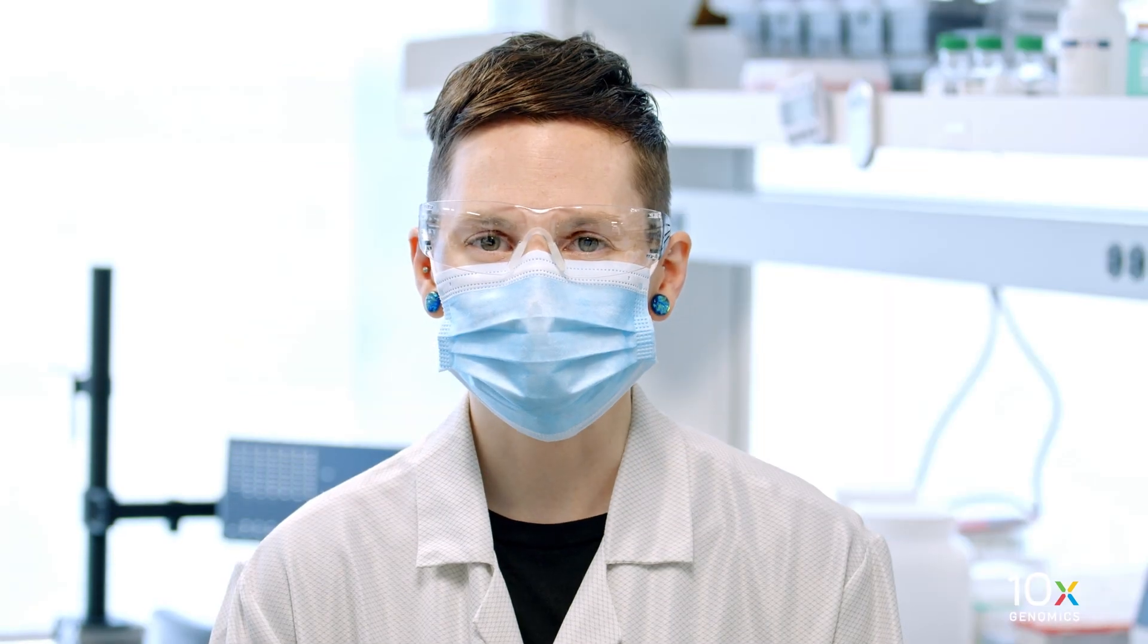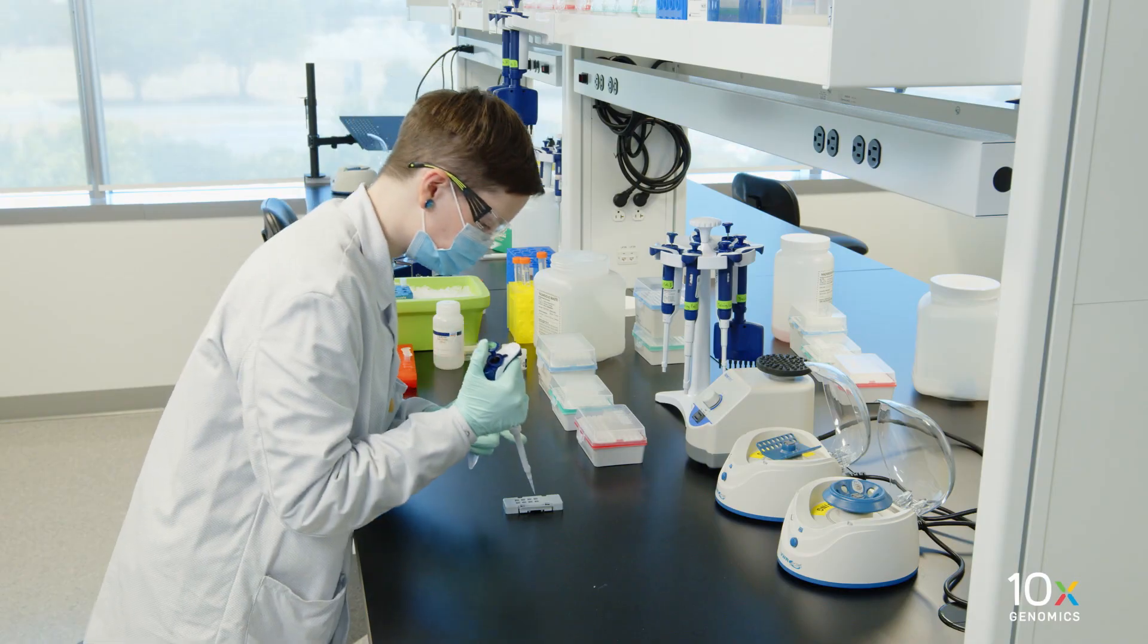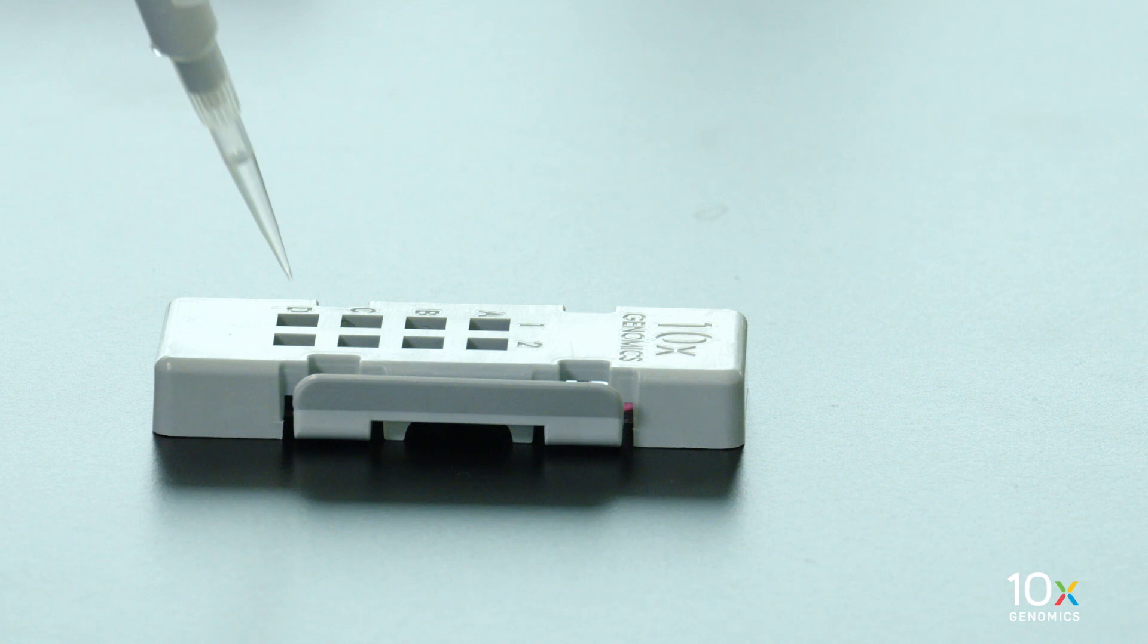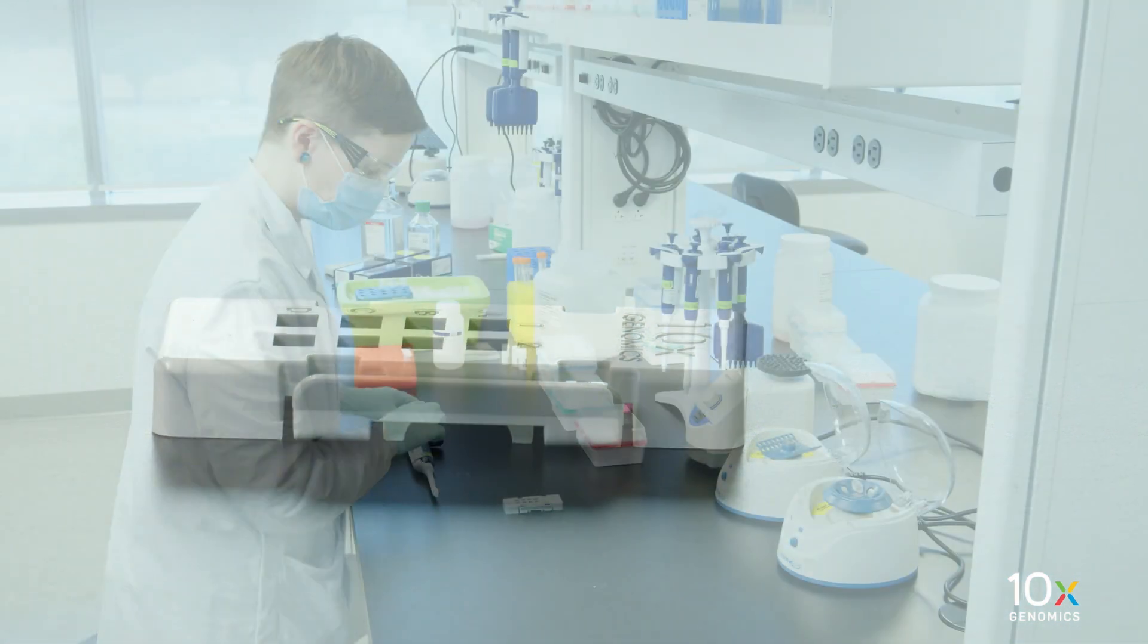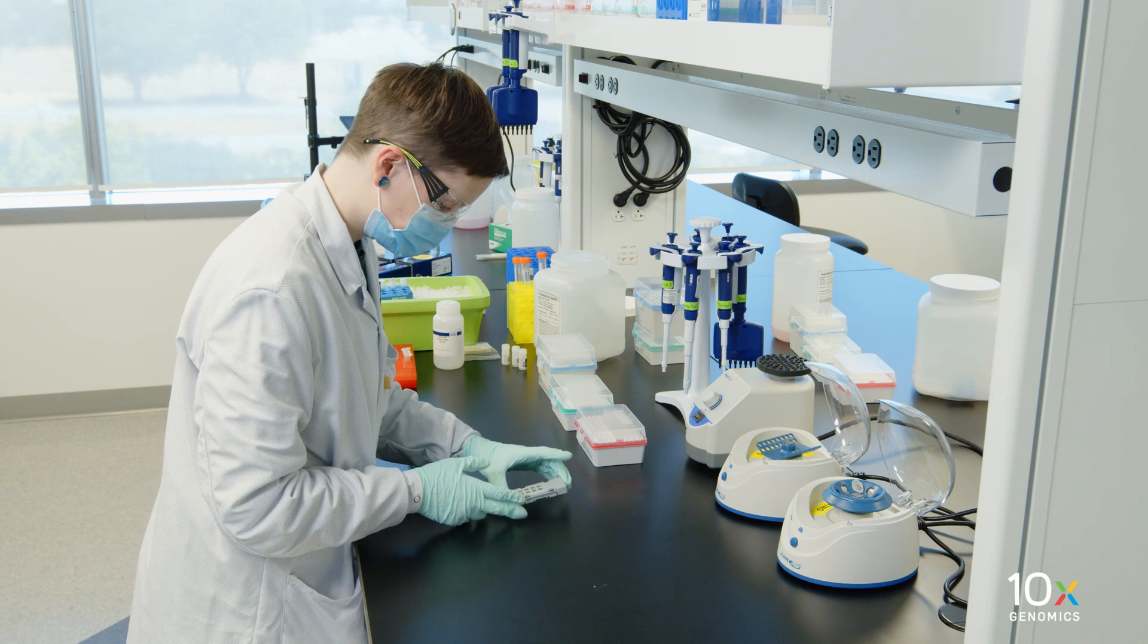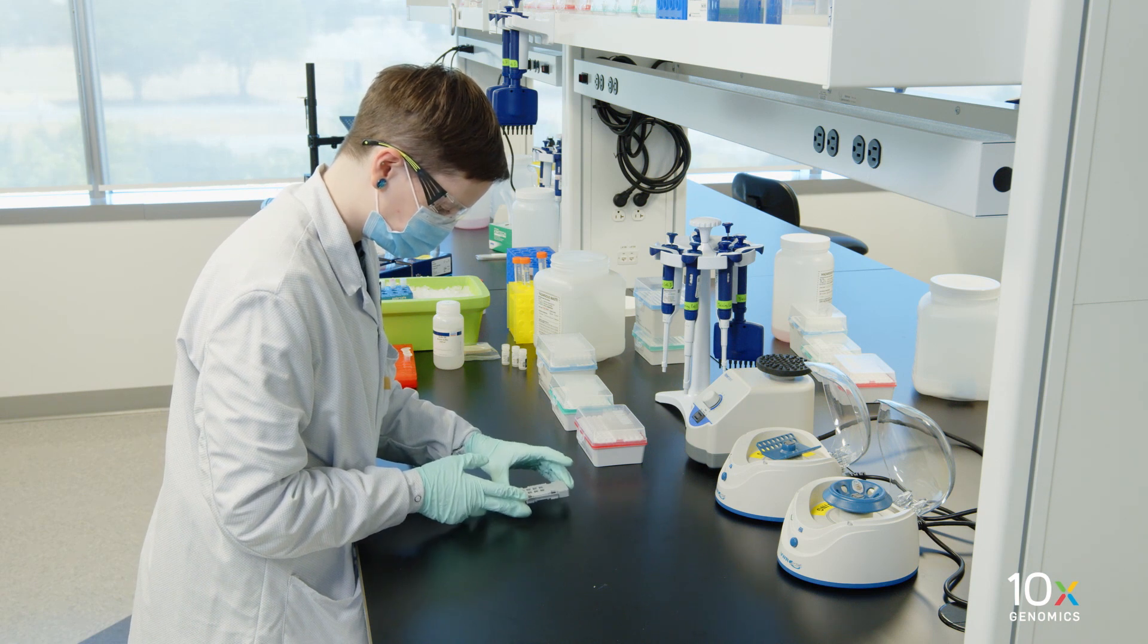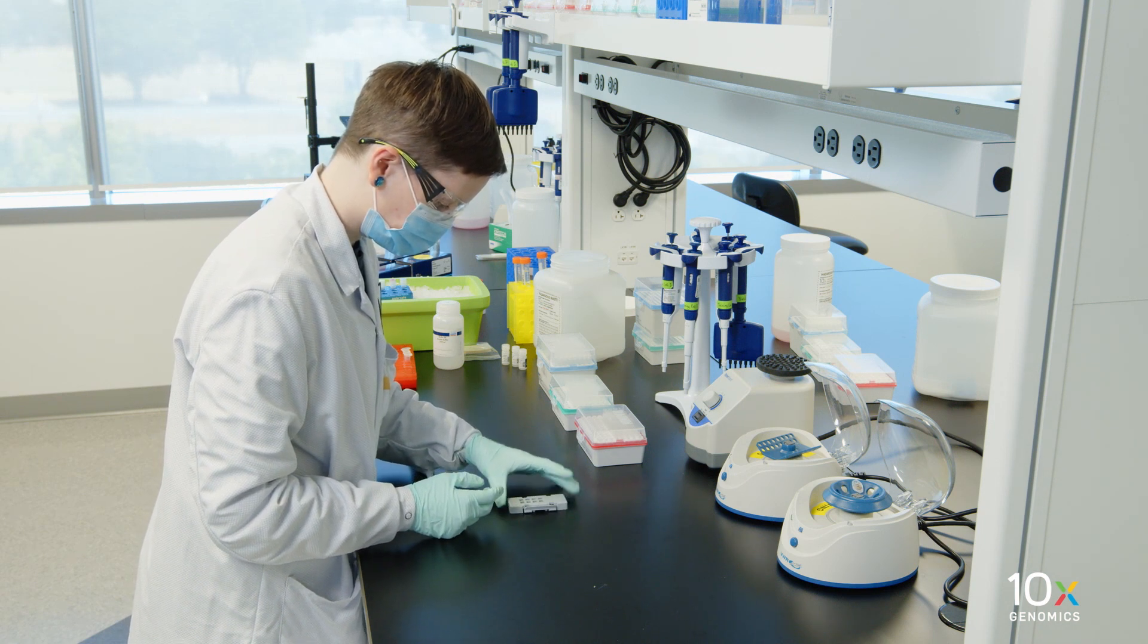Next, we will wash the tissue. Add 100 microliters of 0.1N HCl along the side of the wells to uniformly cover the tissue sections without introducing bubbles. Tap the Visium cassette gently to ensure uniform coverage. Incubate for one minute at room temperature.